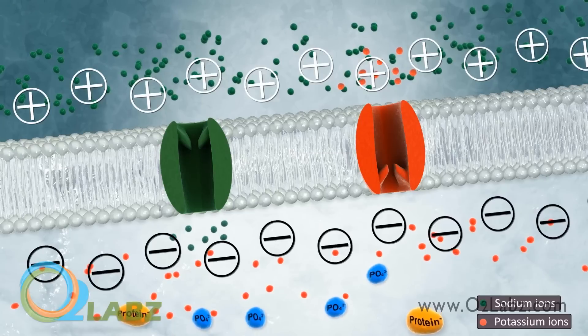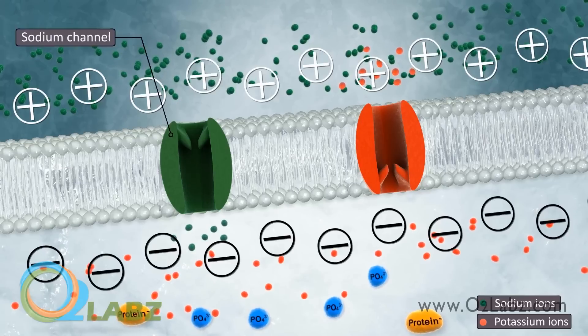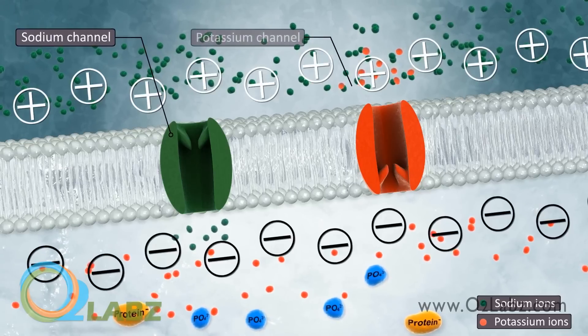Typically, sodium ions tend to enter the cell through an open sodium channel, and potassium ions tend to exit the cell via potassium channels.